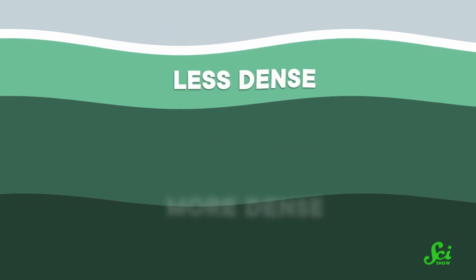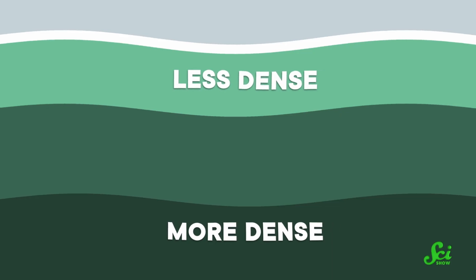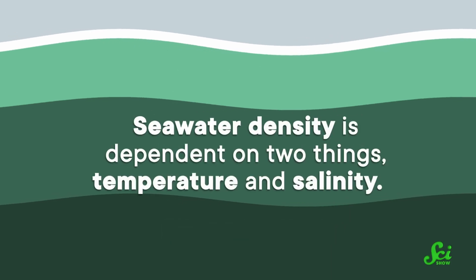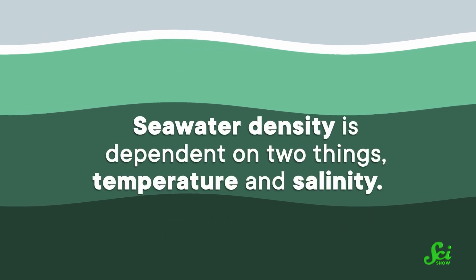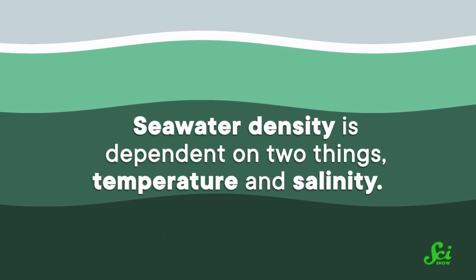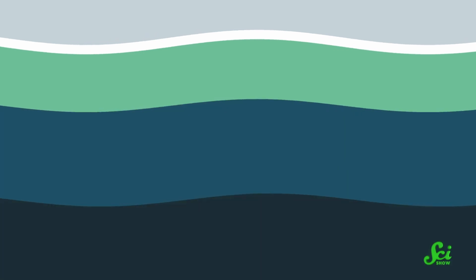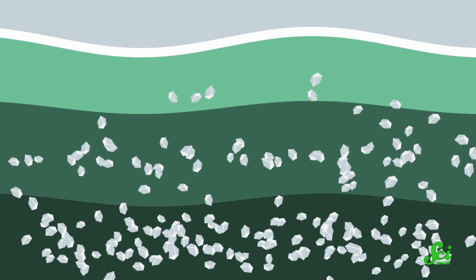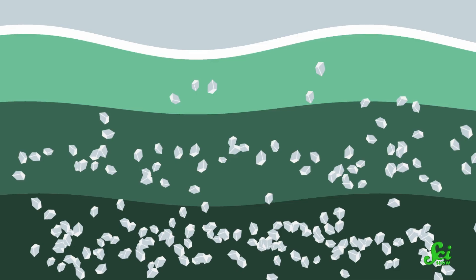Less dense seawater naturally rises to the top, while denser seawater sinks to the bottom. Seawater density is dependent on two things: temperature and salinity. The warmer a parcel of water is, the less dense it is. And the saltier a parcel of water is, the greater its density.